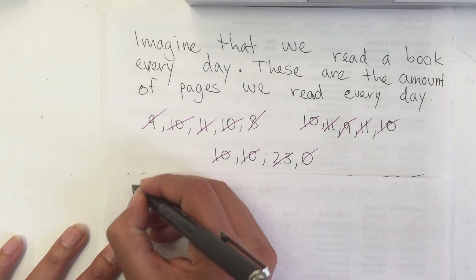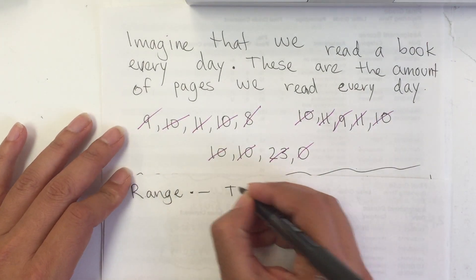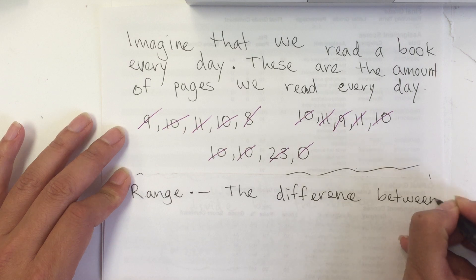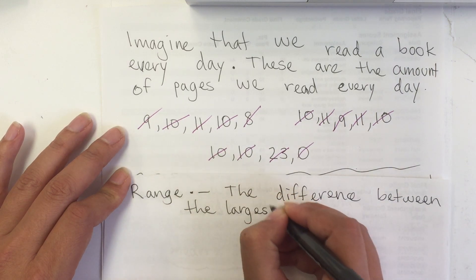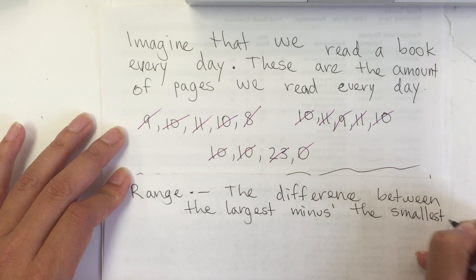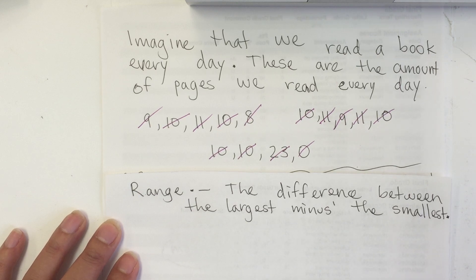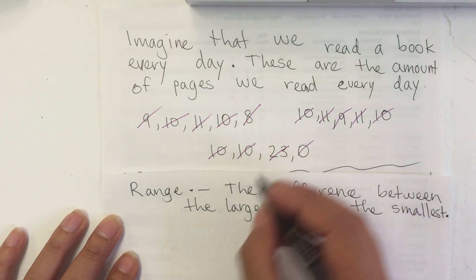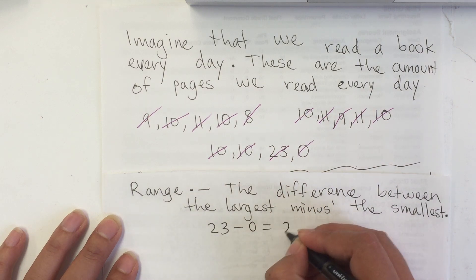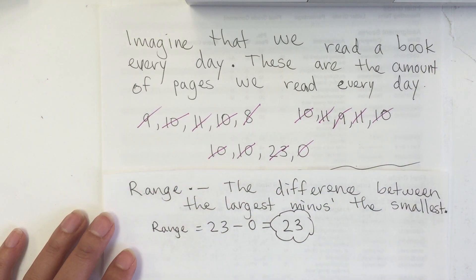The next one is the range. The range is just the difference between the largest minus the smallest. I don't have a trick for that one — just get the biggest number, subtract the smallest number, and the answer is the range. The biggest one was 23 minus the smallest which is 0, so my range is 23.